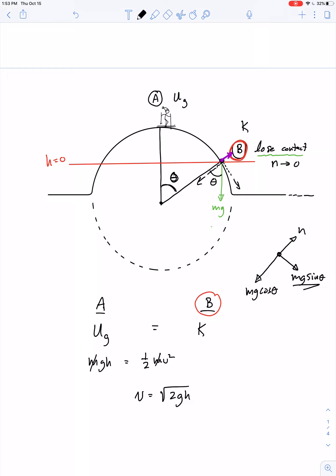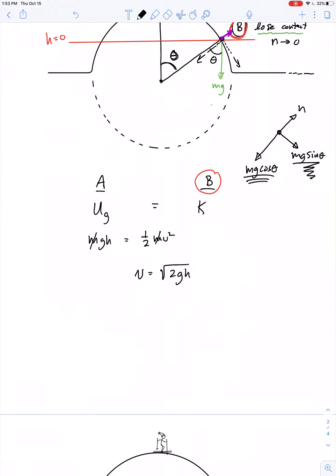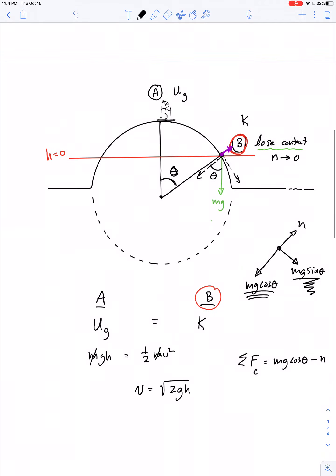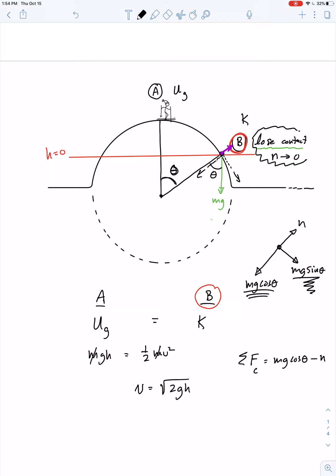So the way to think about this is this component of gravity is what's increasing the speed of the skier as they follow the curve, where this component is providing the centripetal force. Actually, the centripetal force, the net force, centripetally, would be equal to mg cosine theta minus n. However, we're considering the case where we've lost contact. So actually, there is no normal force here. If point B is the point where the skier just goes off, then the normal force is gone.